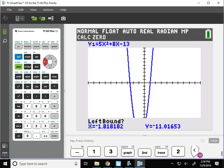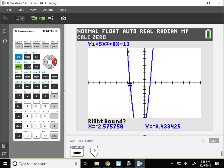I need to use my left and right arrows only. My left bound starts a little bit above the axis, hit enter. Go a little bit below the axis, hit enter, and then a third time to guess. And there's my root at negative 2.6.